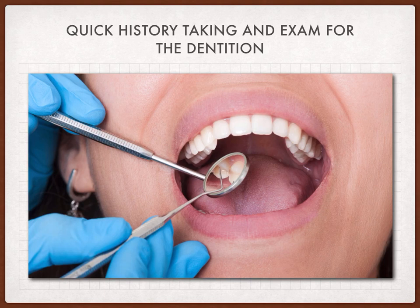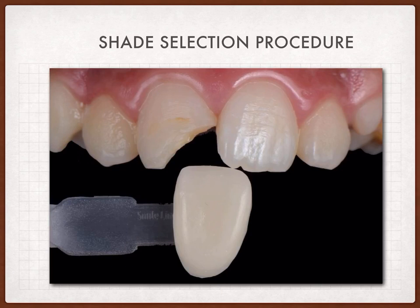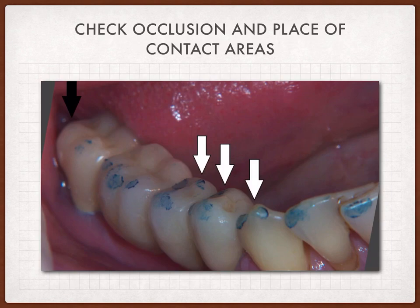The second step is to do a shade selection procedure, in which we take a shade guide and see the color of the tooth that is being restored and select the composite restoration shade accordingly.